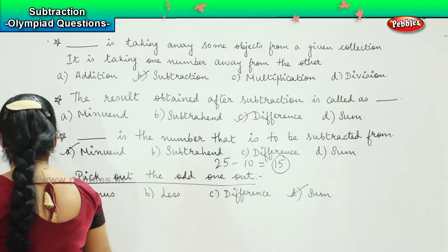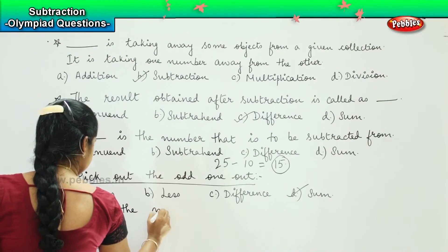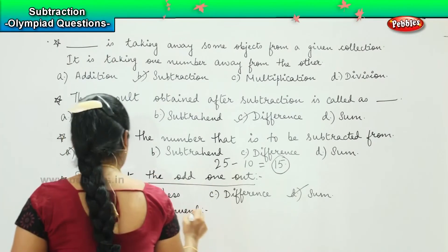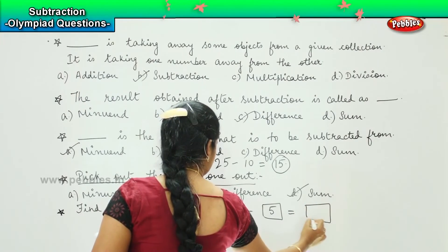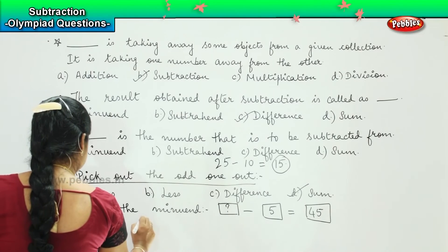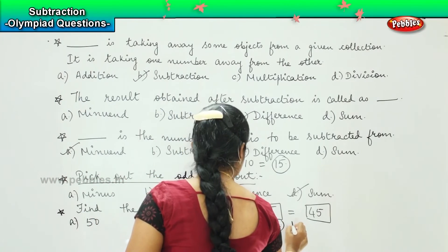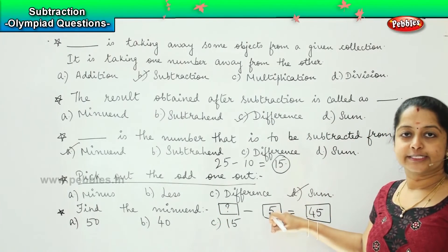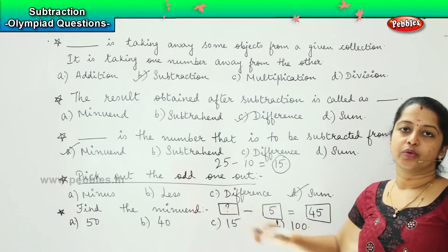Here is your next question: find the minuend. The question is something minus 5 equals 45. You need to find the minuend. The options are A: 50, B: 40, C: 15, and D: 100. The minuend is always the greatest number. To find it, we add the difference with the subtrahend.